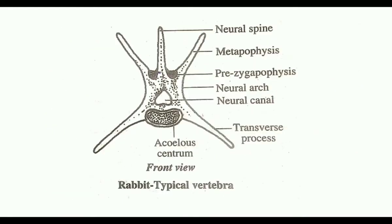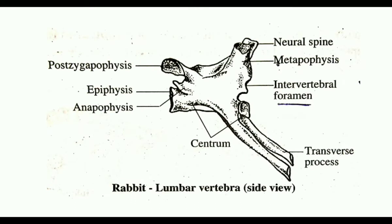Just behind the pre-zygapophysis, there is a pair of upwardly directed processes called metapophysis. At the base of the post-zygapophysis, there is a pair of small backwardly projecting processes called anapophysis. Both metapophysis and anapophysis are collectively known as mammillary processes.